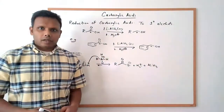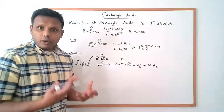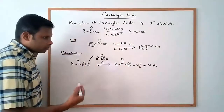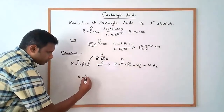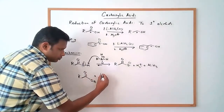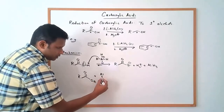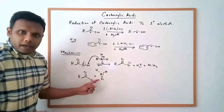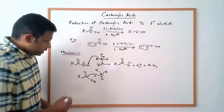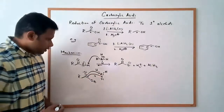After this first step, there are different proposals. One possible mechanism is that the aluminum hydride now reacts with the carboxylate. One of the hydrides on the aluminum attacks the acyl carbon, and simultaneously the double bond opens up and attacks the aluminum.